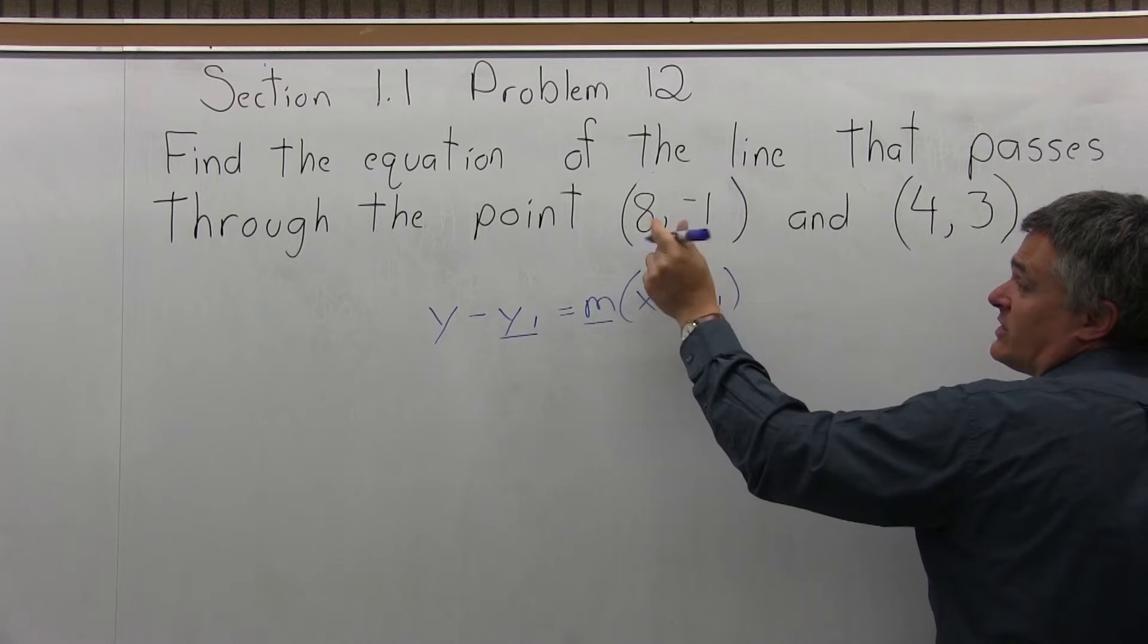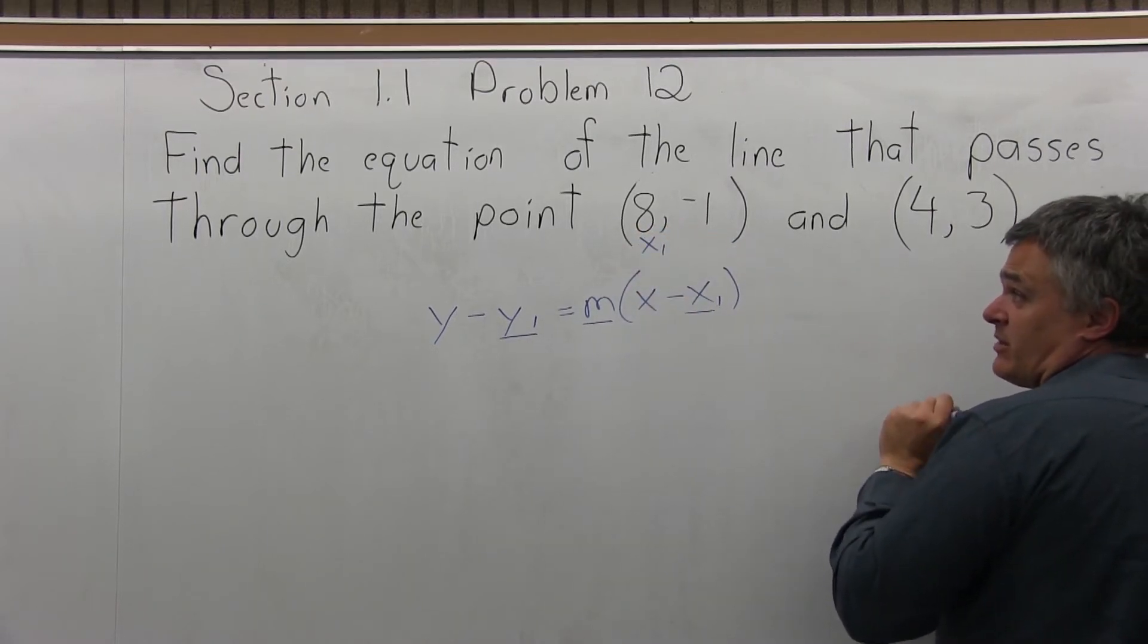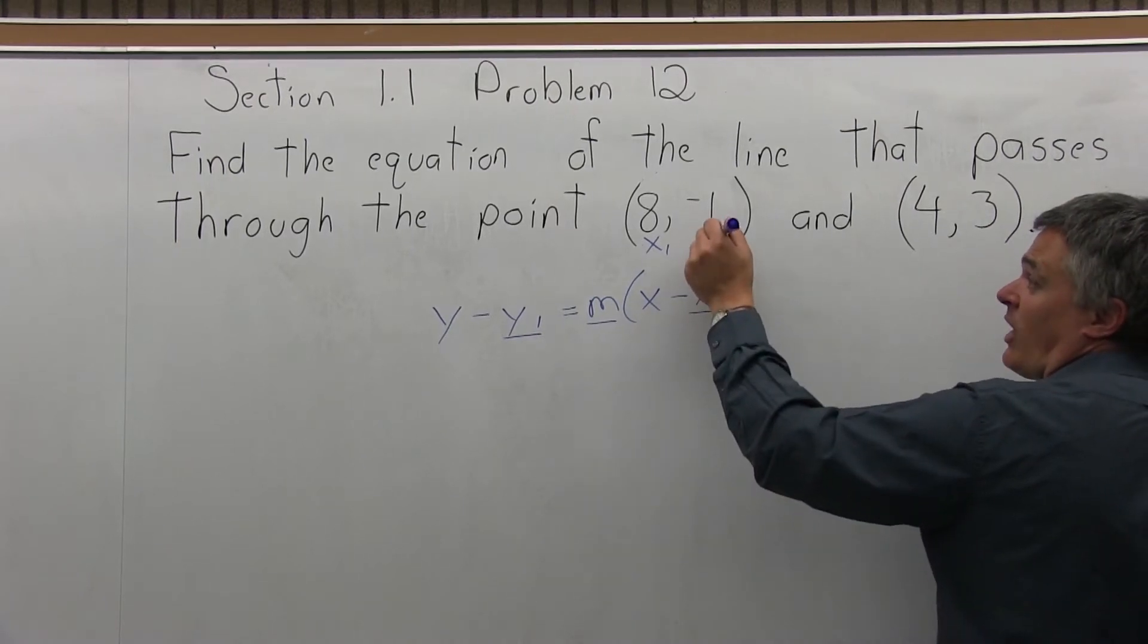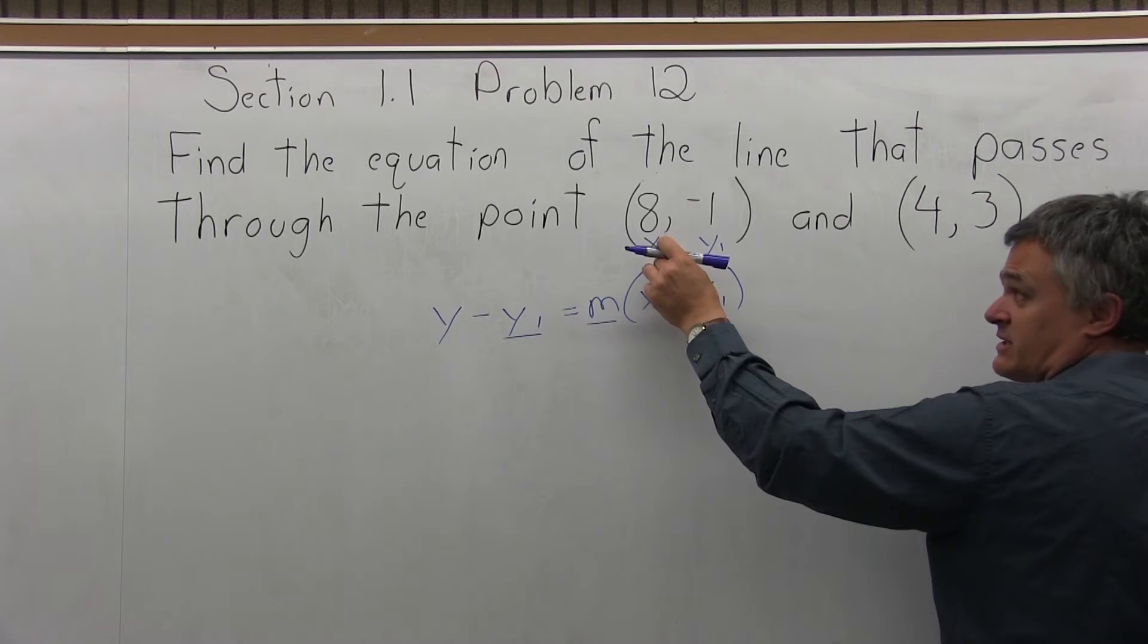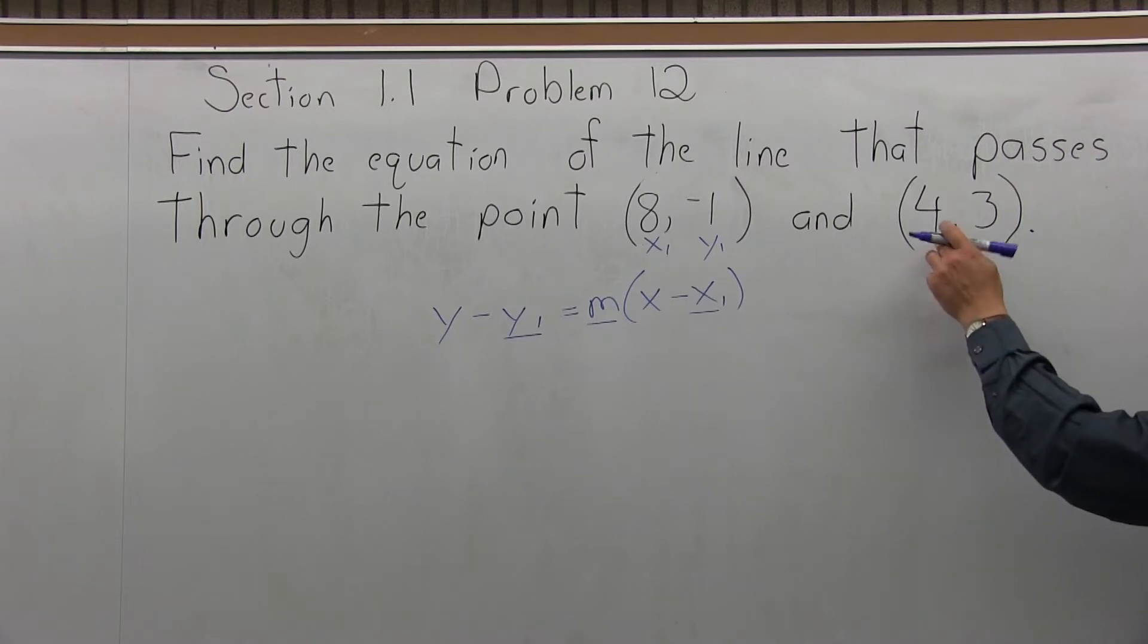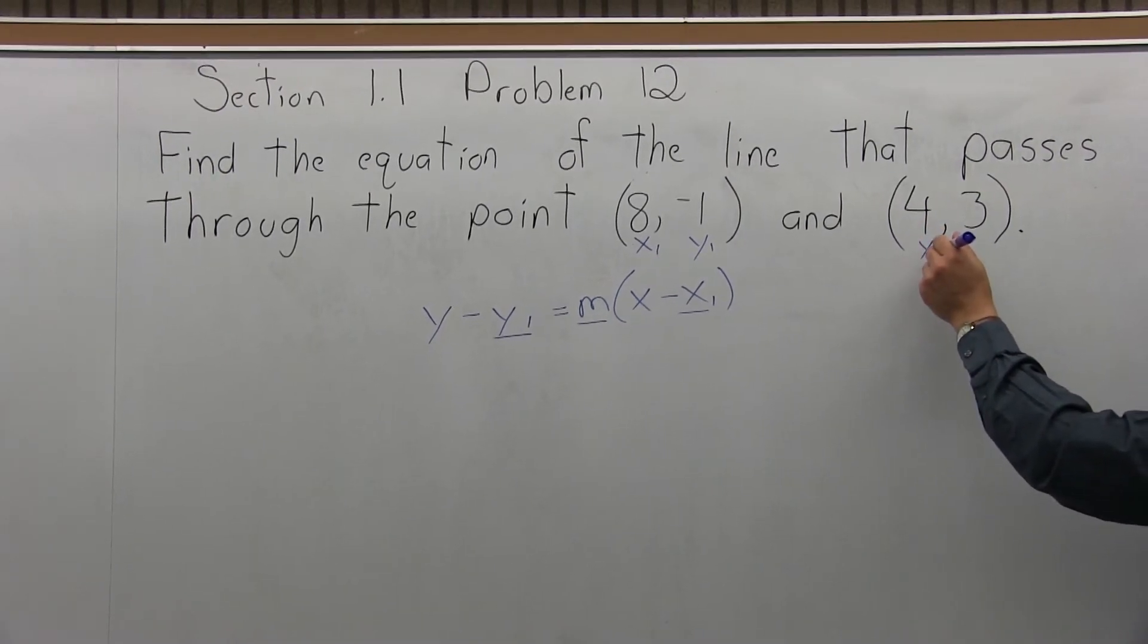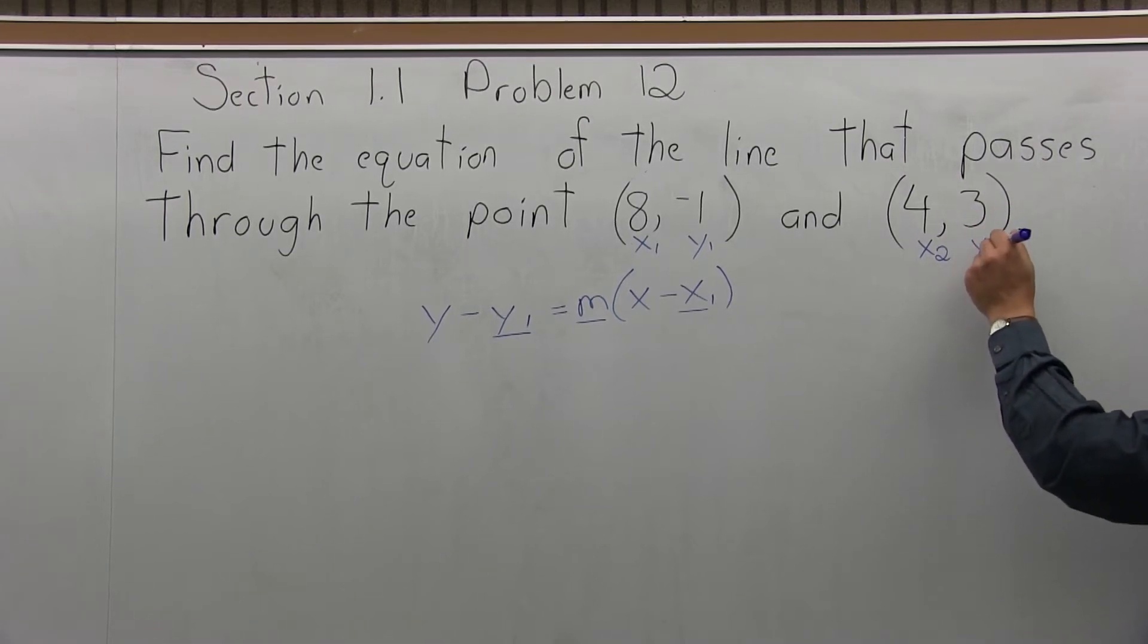The (8, -1) is listed first, so I will consider it to be point 1. The x-coordinate of 8, I will label as x1, and the y-coordinate of negative 1, I'll label as y1. This is point 1, so its x value is x1, its y value is y1. The point that's listed second, I consider to be point 2, its x value of 4, I will label as x2, and its y value of 3, I will label as y2.